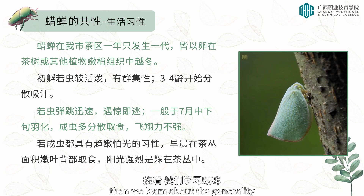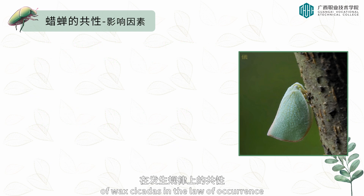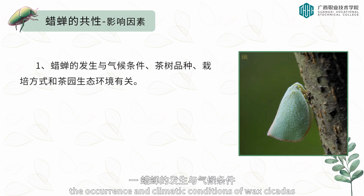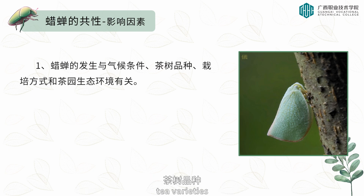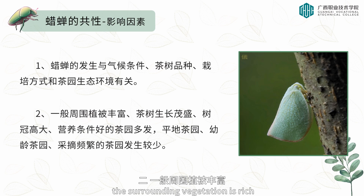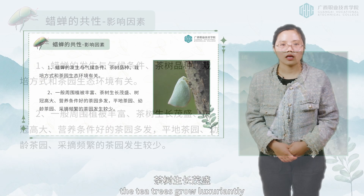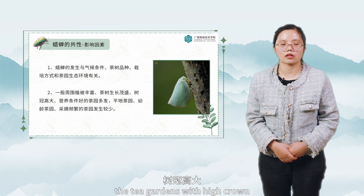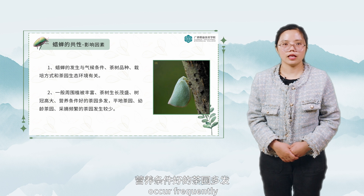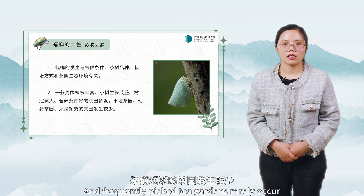Now let's learn about the generality of waxicadas in the law of occurrence. The factors that affect the occurrence of waxicadas are as follows: climatic conditions, tea varieties, and the cultivation mode related to the ecological environment of the tea garden. Generally speaking, the surrounding vegetation is rich and the tea trees grow luxuriantly. Tea gardens with high crown and good nutritional conditions occur frequently, while young tea gardens, flat tea gardens, and frequently picked tea gardens rarely occur.